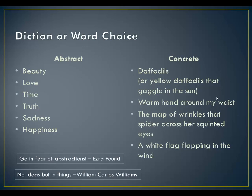For example, if you were going to talk about a concrete image for beauty, you could talk about daffodils — the first spring daffodils, or yellow daffodils that sway in the sun. That gives you a beautiful image you can see in your mind that's concrete. A symbol for love might be a warm hand around my waist; time could be the map of wrinkles that spider across her squinted eyes; sadness or truth could be a white flag flapping in the wind. You can see how these images give a specific concrete idea to an abstract thought. Good poetry goes in fear of abstractions, as Ezra Pound says.